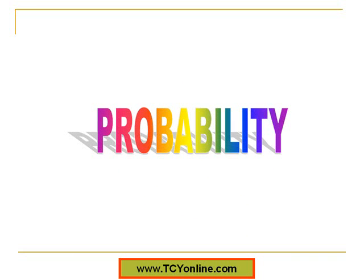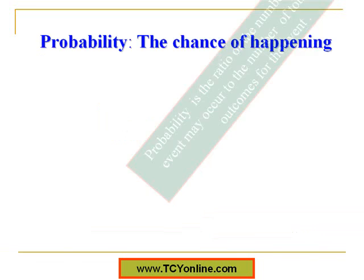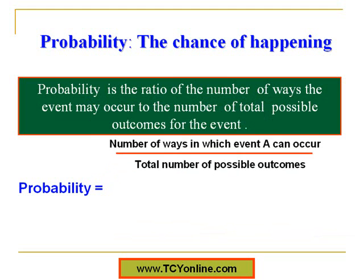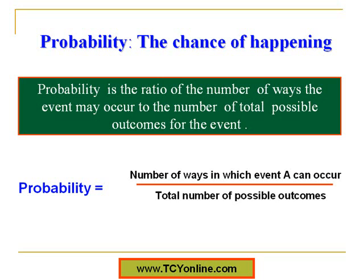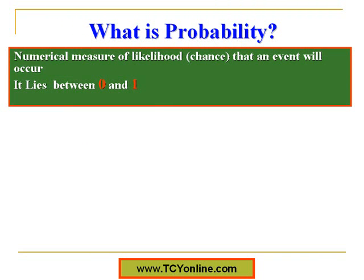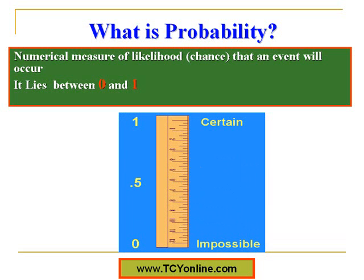Now let's move to probability. Probability simply means the chance of happening. We can define probability as the ratio of the number of ways the event may occur to the number of possible outcomes for that event — that is, number of ways the event may occur over the total number of possible outcomes. Probability is also the numerical measure of the chance that an event will occur, and it always lies between 0 and 1. When probability is 0, the event is impossible; when it is 1, the event is certain.